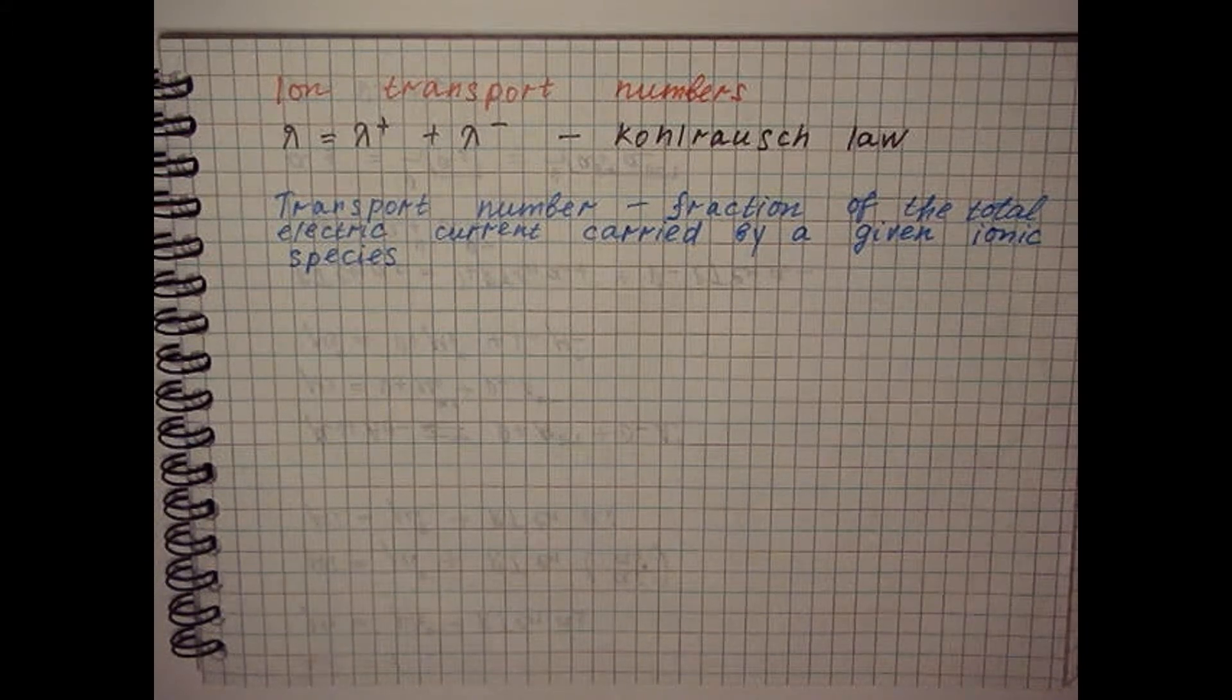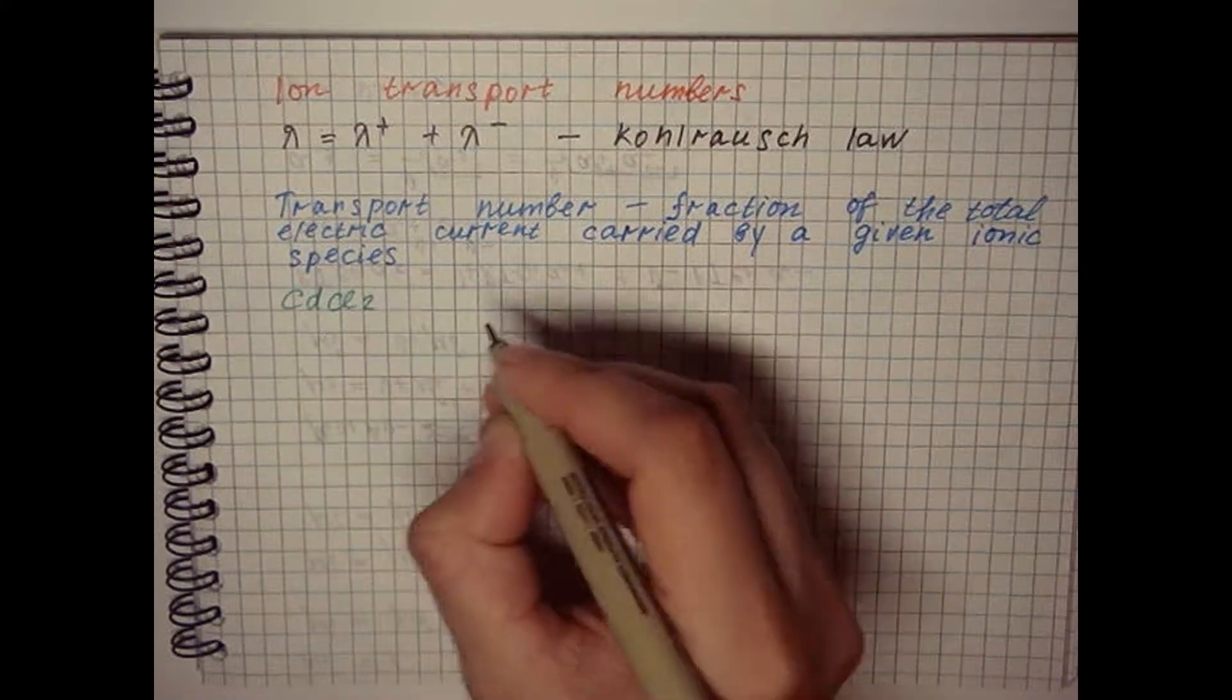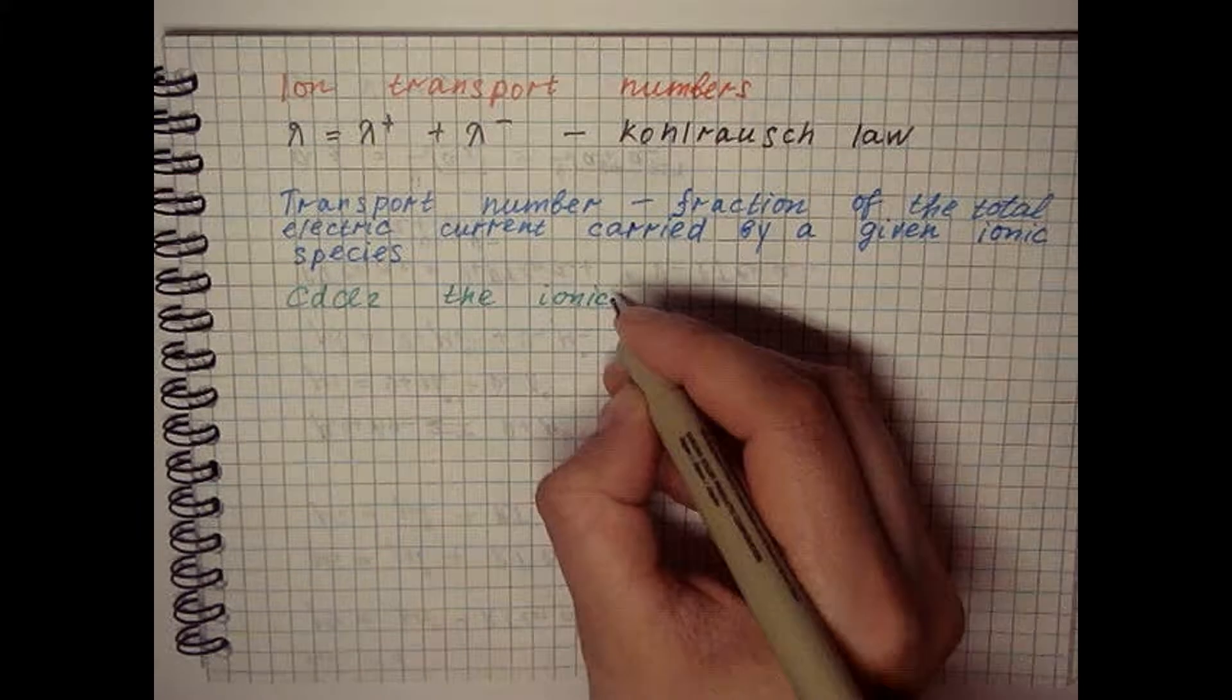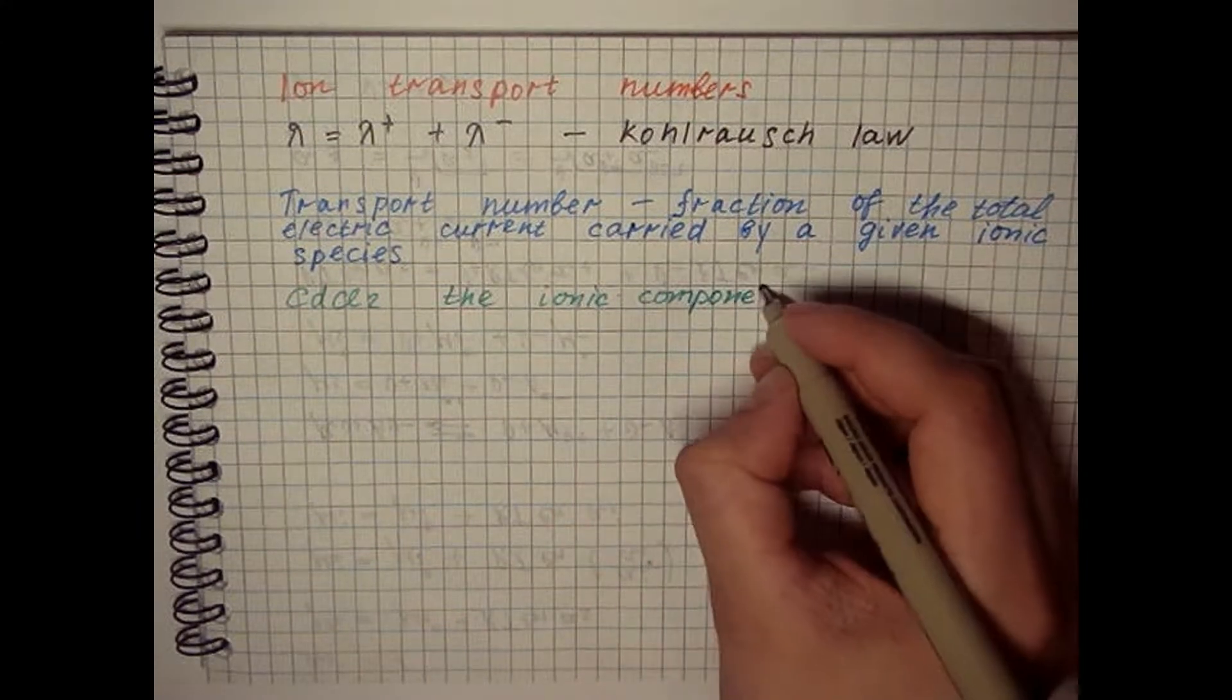For example, in an aqueous solution of cadmium chloride, a component containing cadmium cation may exist as particles.